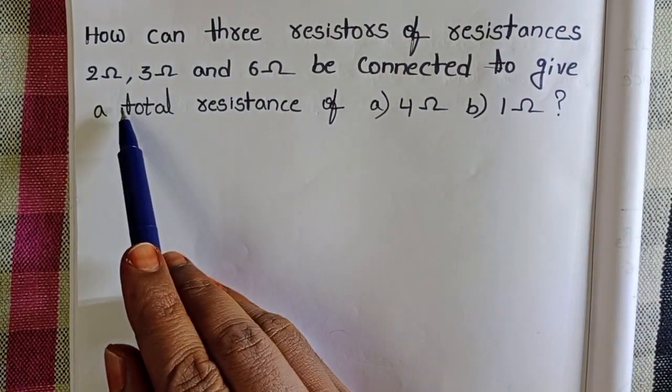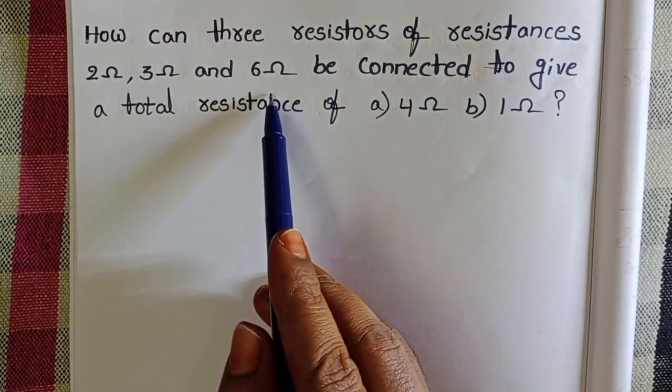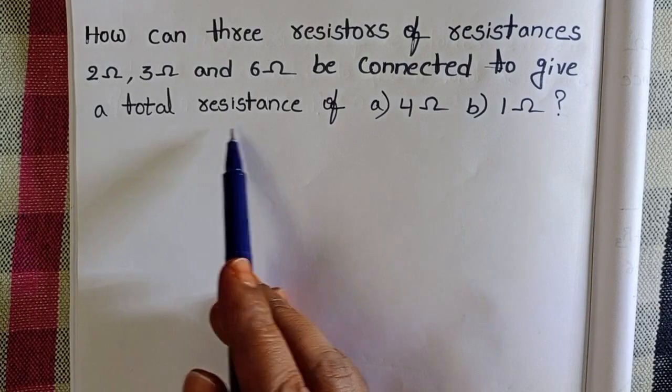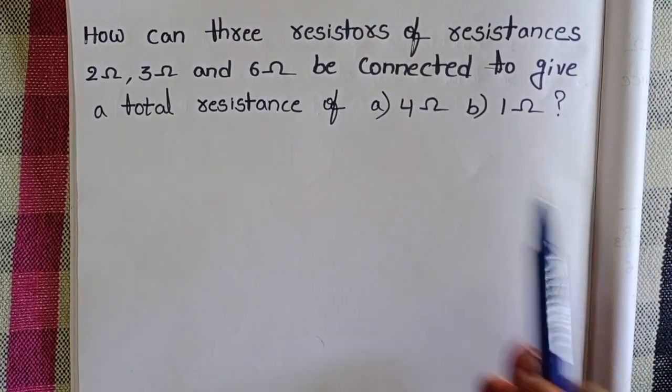How can three resistors of resistances 2 ohm, 3 ohm and 6 ohm be connected to give a total resistance of 4 ohm and 1 ohm?